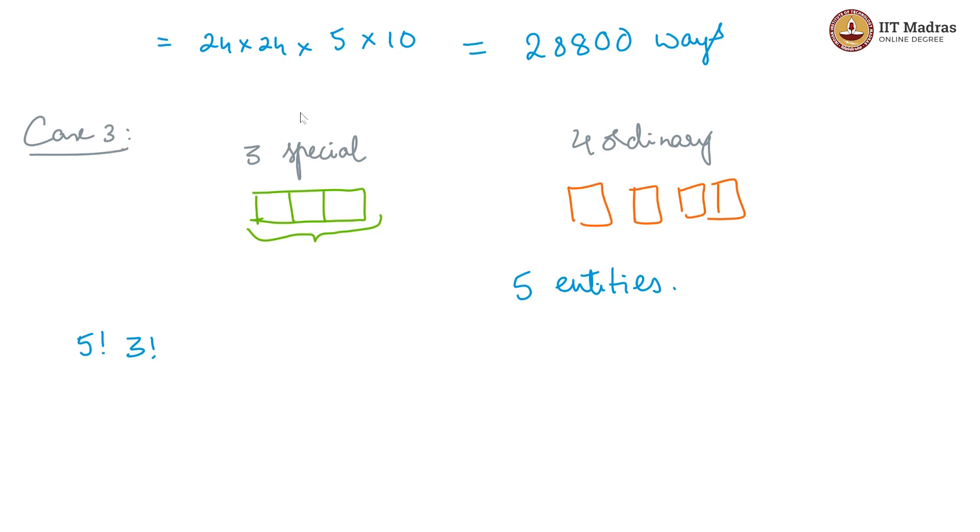And now, we look at how many ways we can pick these 3 from 5. That is 5C3 and again picking these ordinary ones from 5 that is 5C4. This will give us 120 into 6 into 10 into 5 which is equal to 36,000 ways.